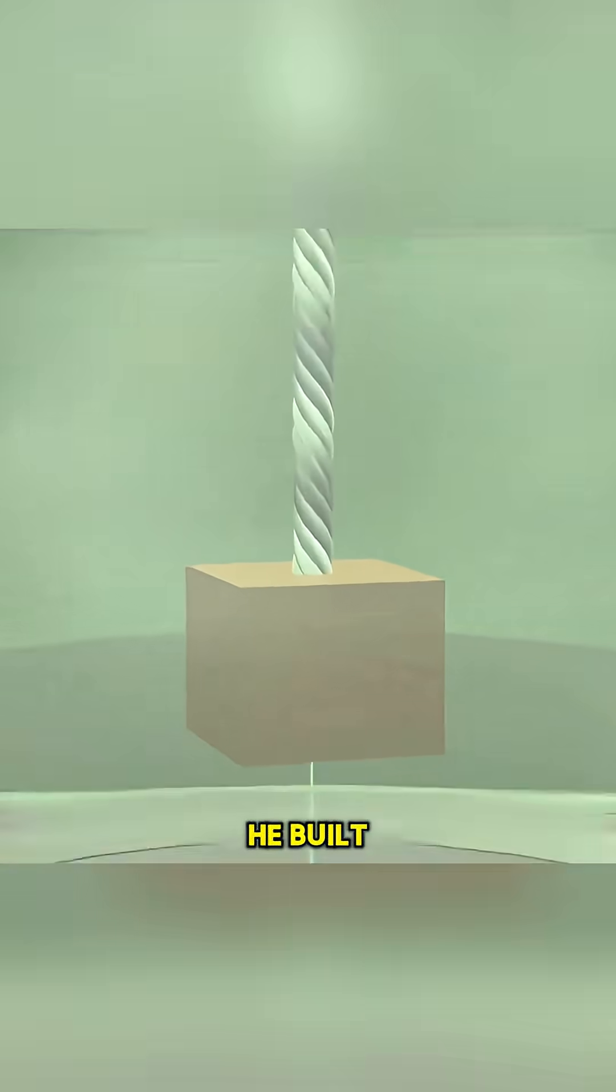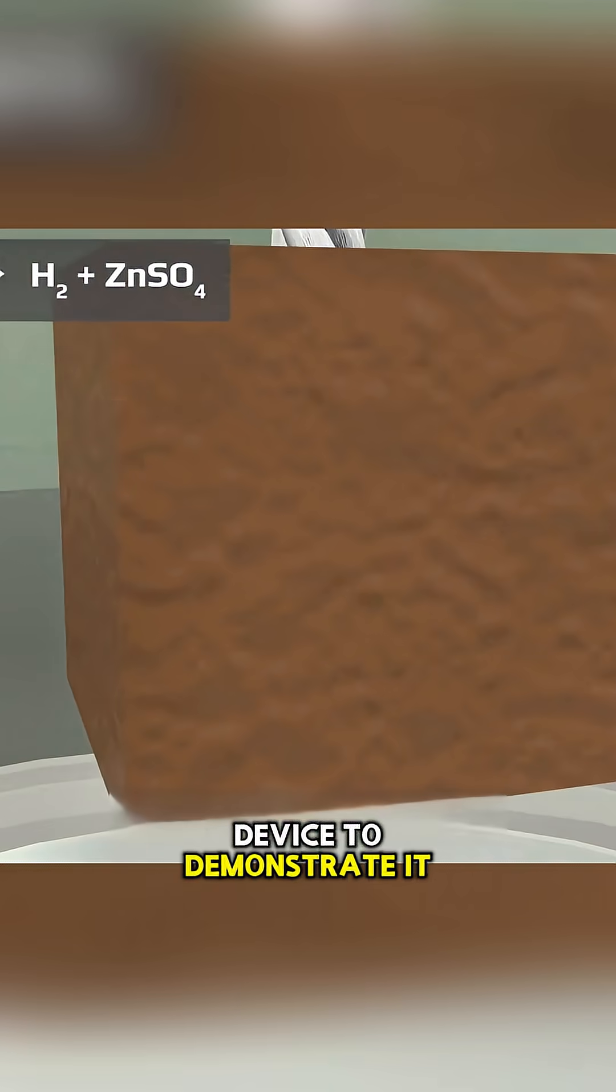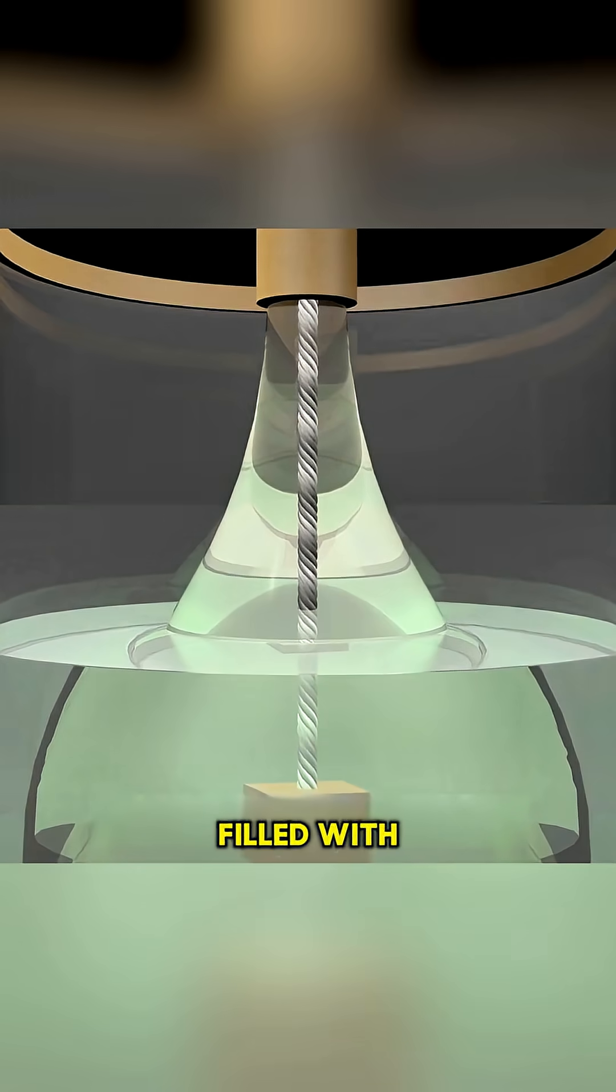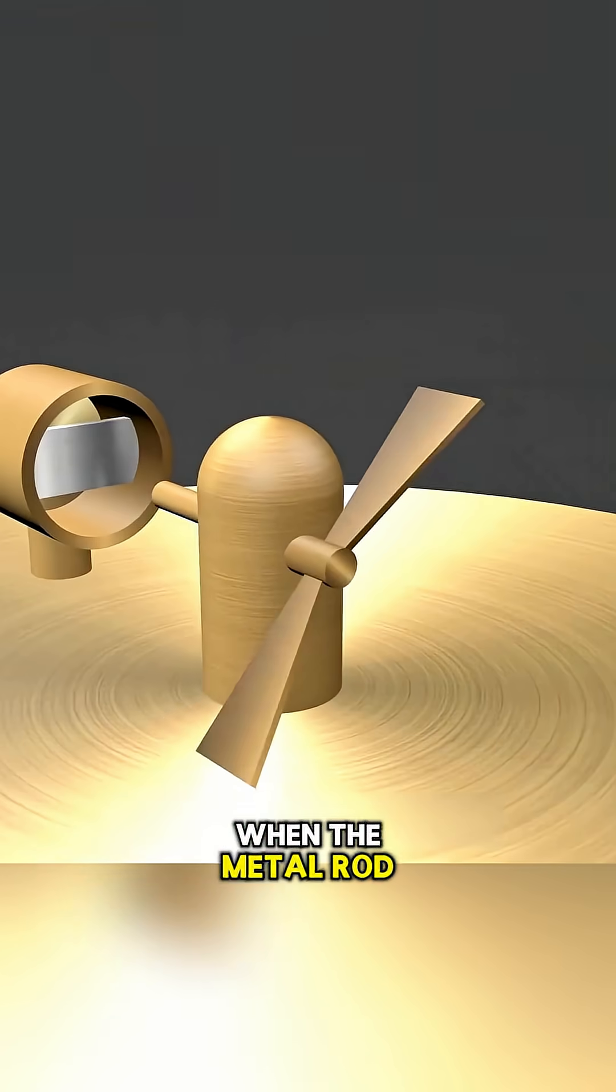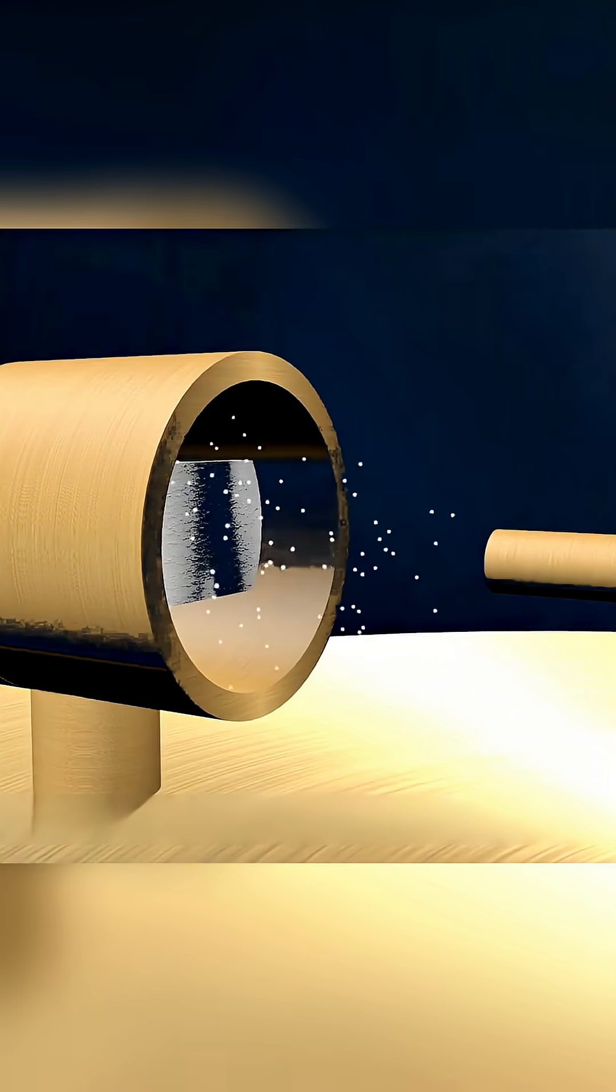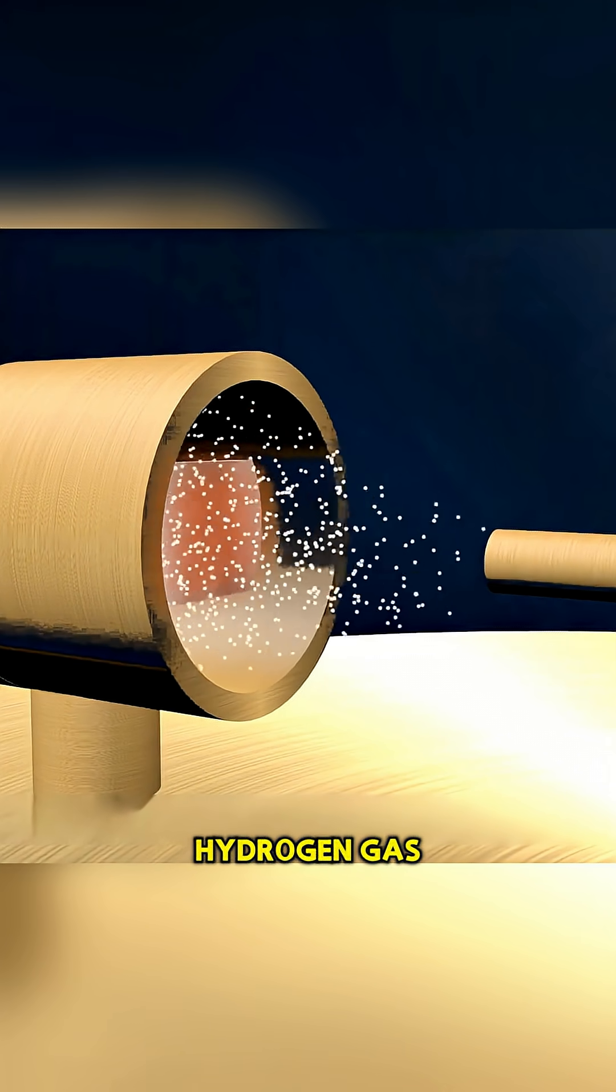Captivated by this reaction, he built a reusable device to demonstrate it. The lamp contained a glass bottle filled with sulfuric acid. When the metal rod, or wick, dipped into the acid, a chemical reaction produced hydrogen gas.